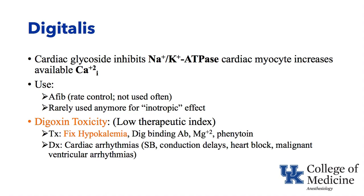Digoxin has a very low therapeutic index, and DIG toxicity can present with visual changes, nausea and vomiting, GI upset, cardiac dysrhythmias, and rhythm disorders. Digoxin binds to the sodium-potassium ATPase at the potassium binding site, so fixing coexisting hypokalemia can reduce DIG toxicity — one treatment is to give potassium. There are DIG binding antibodies — digibind — that can be administered to eliminate the digoxin. Magnesium and dilantin are treatments for some of the dysrhythmias associated with DIG toxicity.